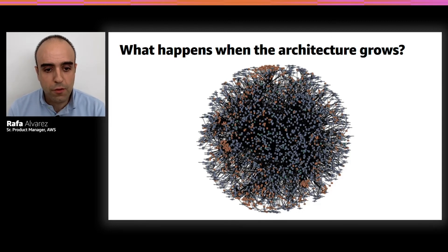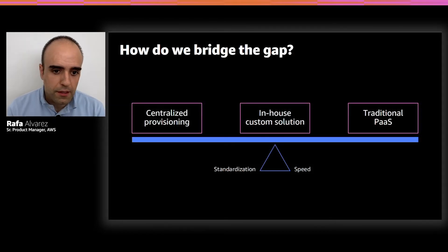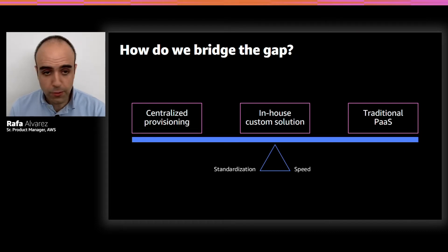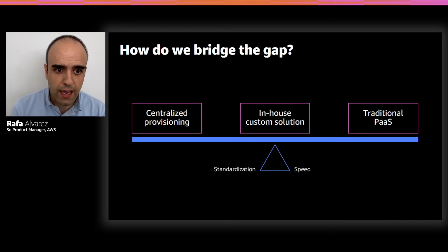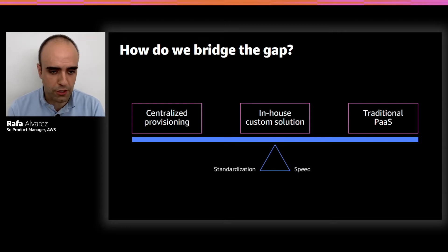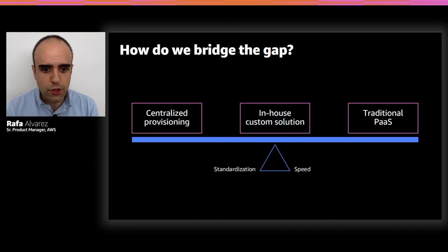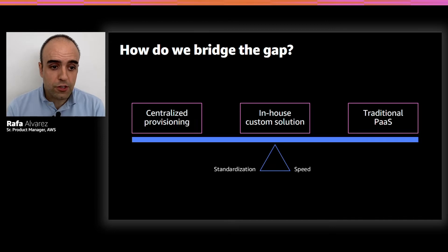When we talk to customers, we found that this problem is typically solved in two or three ways. The first one is centralized provisioning — you err on the side of standardization. Anytime there is a new project that requires infrastructure, the central infrastructure team has to be contacted. Developers get a ticket, explain what they need, and the infrastructure team provisions the infrastructure, sets up the pipeline, and gives it to developers. This ensures maximum standardization, but it also limits your speed — the infrastructure team becomes a bottleneck.